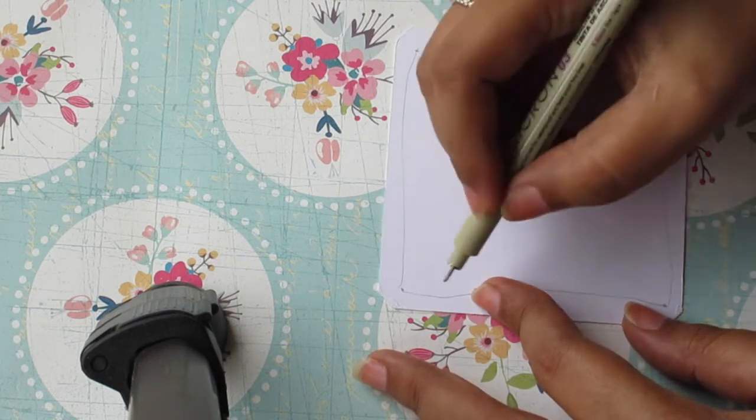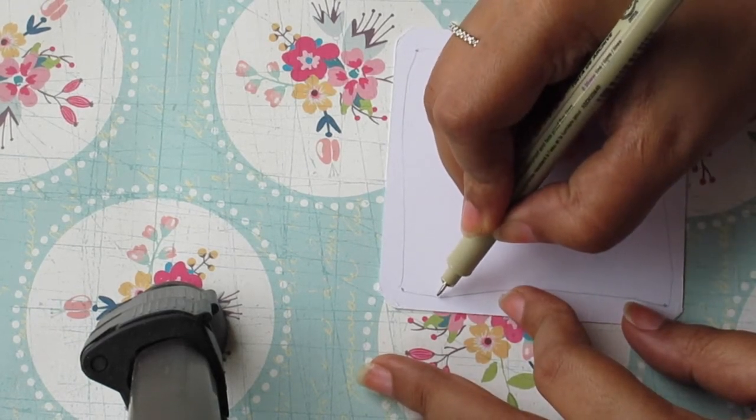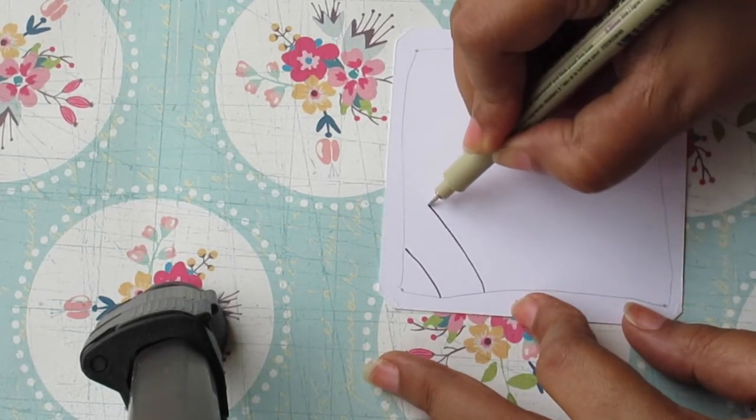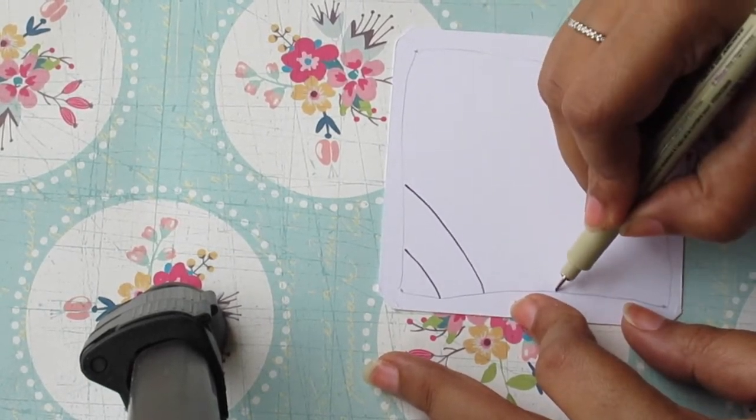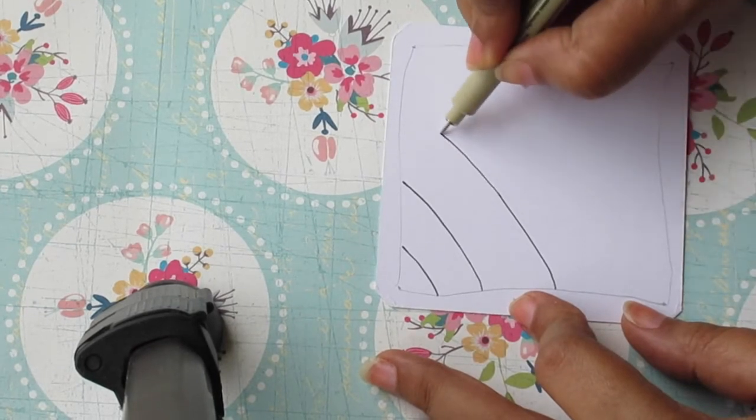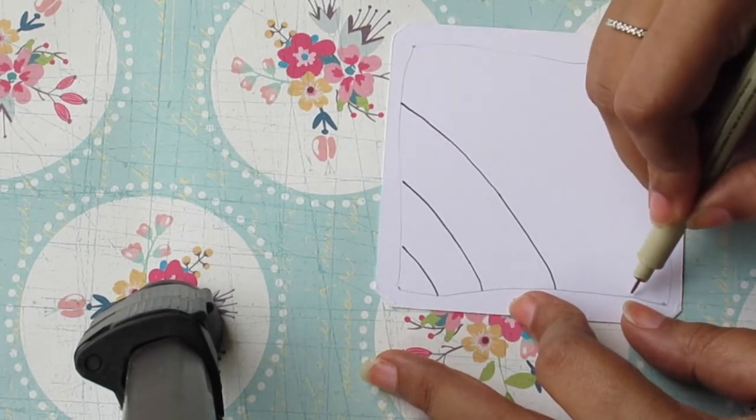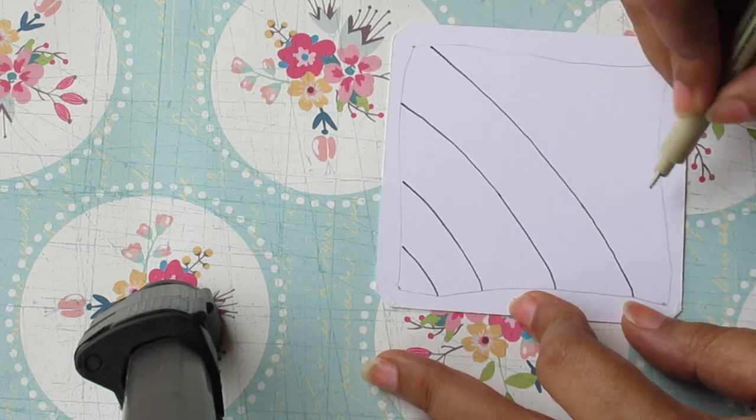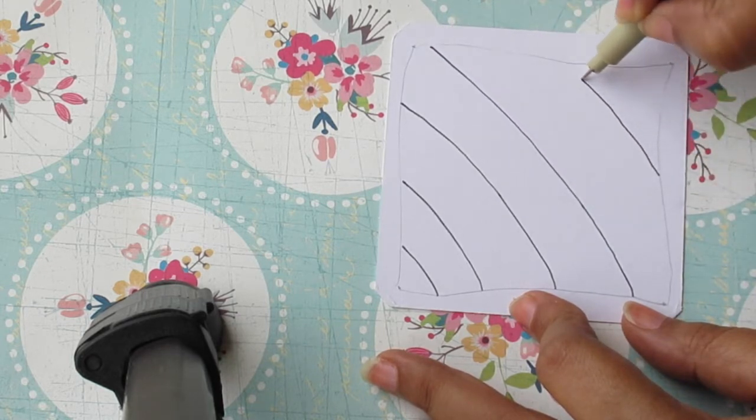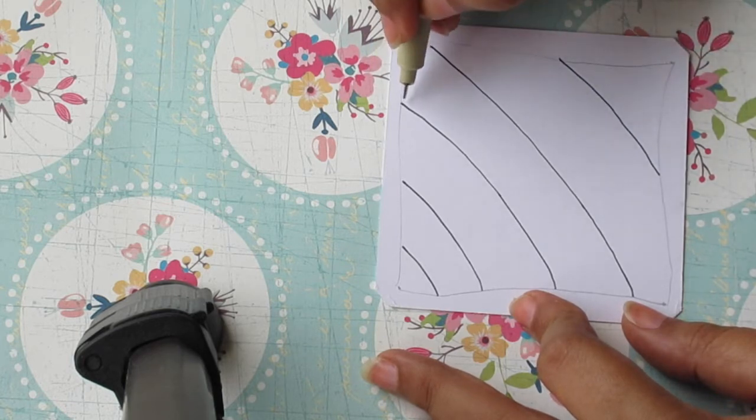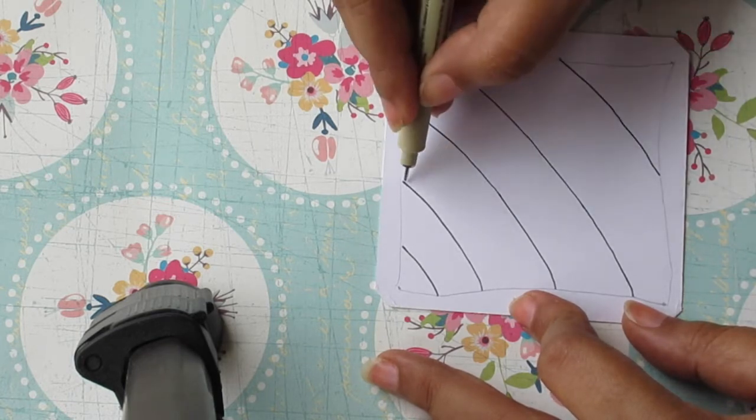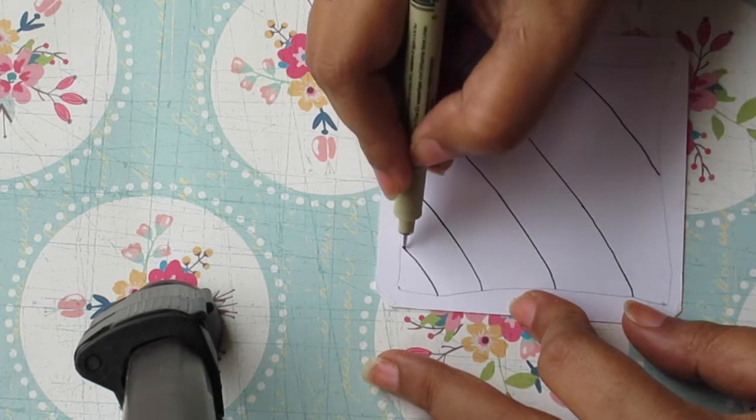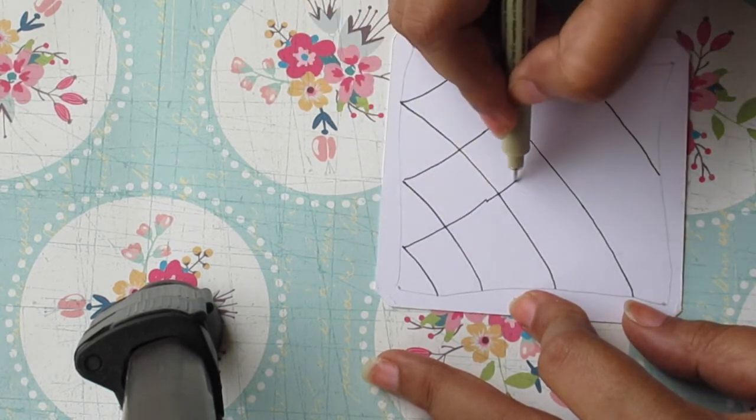Now I'm going to take my pen and draw lines across like this and these are parallel lines with a good amount of distance between each of them. Now draw lines across the existing lines and make a checkerboard kind of a pattern.